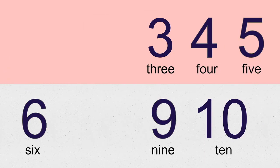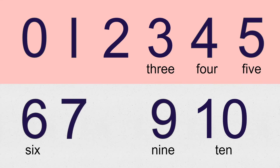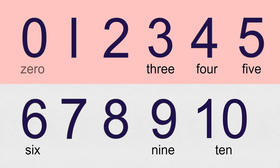We have spelled three, four, five, six, nine, and ten. And now we're gonna look at zero, one, two, seven, and eight. These number words follow some different rules. Let's look at their words: zero, one, two, seven, and eight.